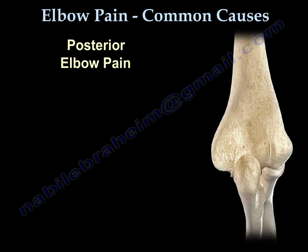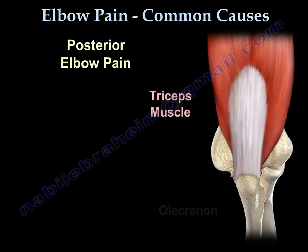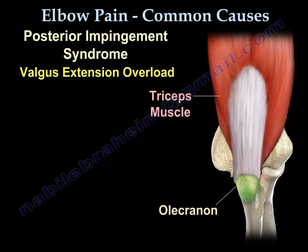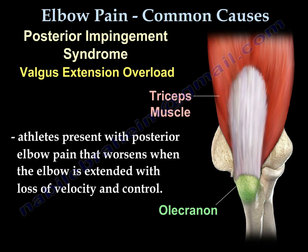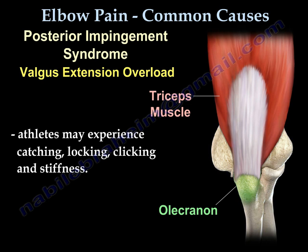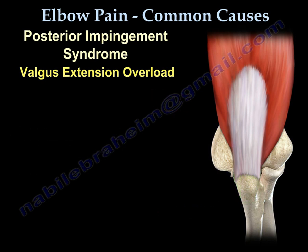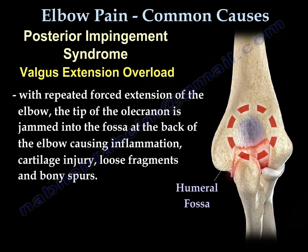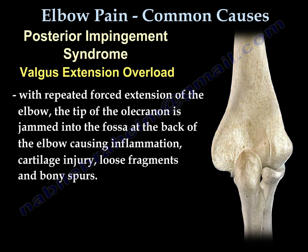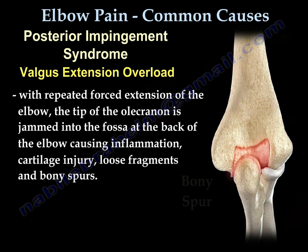Posterior elbow pain: the triceps muscle attaches to the olecranon. Posterior impingement syndrome is a valgus extension overload, where valgus and extension forces injure the posterior part of the elbow. The athlete presents with posterior elbow pain worsening on extension, with loss of velocity and control, and may experience catching, locking, clicking, and stiffness. The tip of the olecranon is jammed into the fossa at the back of the elbow, causing irritation, inflammation, cartilage injury, loose fragments, and bone spurs.